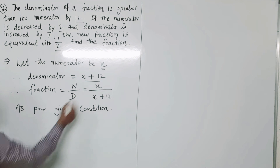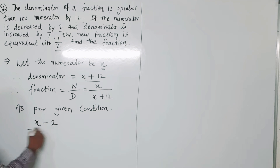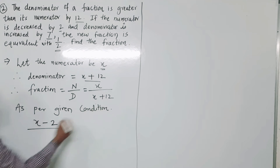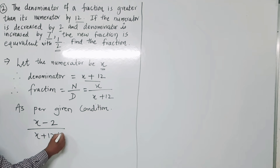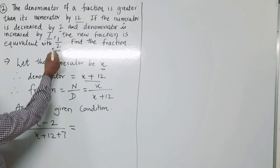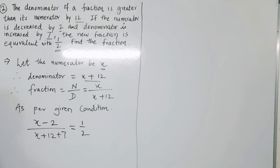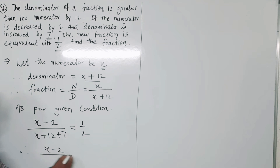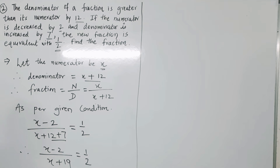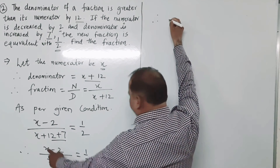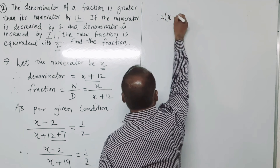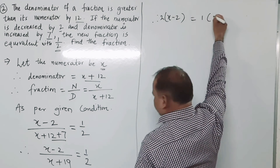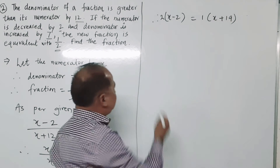As per the given condition, if the numerator is decreased by 2 and the denominator is increased by 7, the new fraction is (x − 2) upon (x + 12 + 7), which equals 1 upon 2. So (x − 2) upon (x + 19) equals 1 upon 2. By cross multiplication: 2 multiplied by (x − 2) equals 1 into (x + 19).